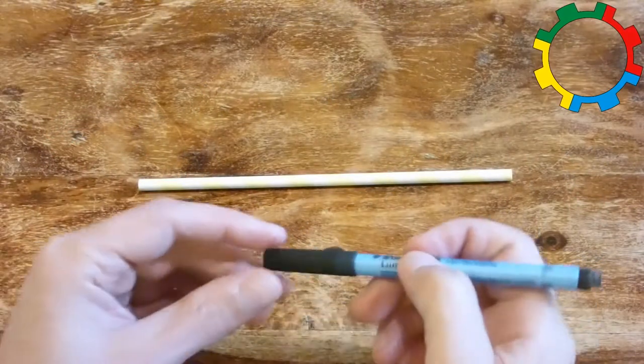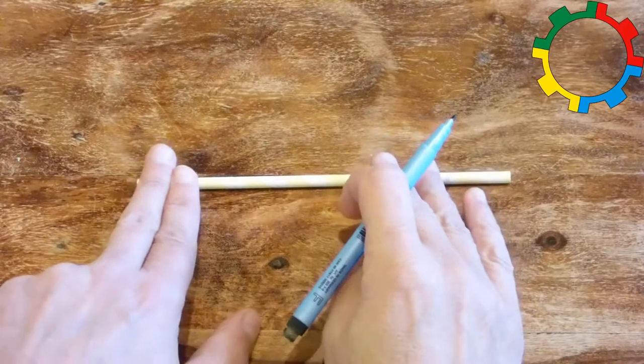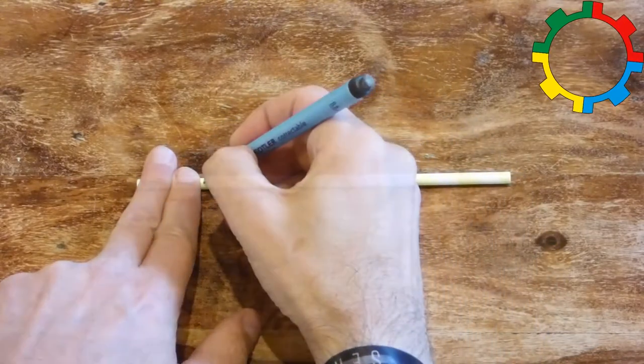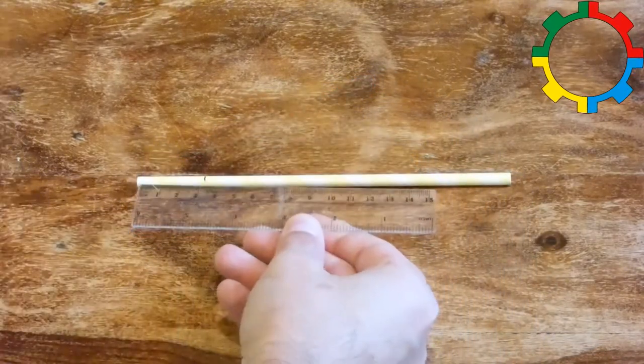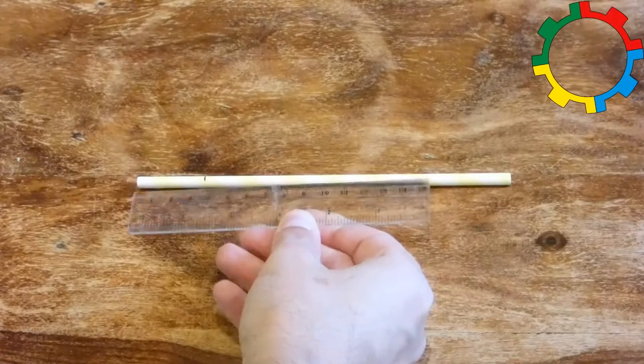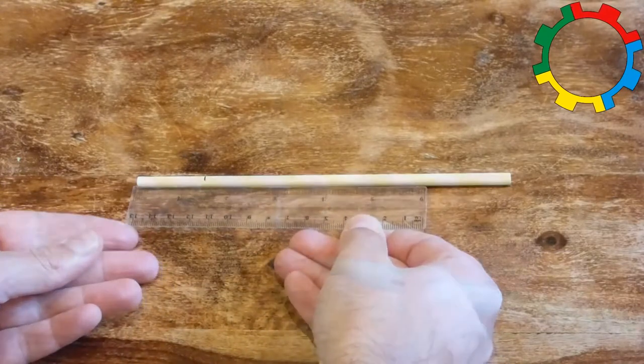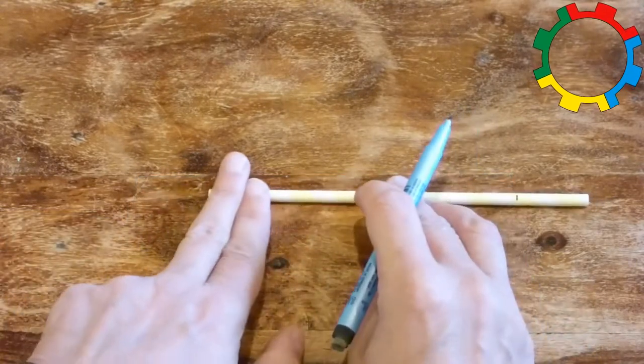Now we can start the construction. Take one straw and measure two finger widths from the end along the straw and mark this point. If you want to use a ruler, this is about 3 centimeters or 1 and a half inch. Do the same at the other end of the straw.